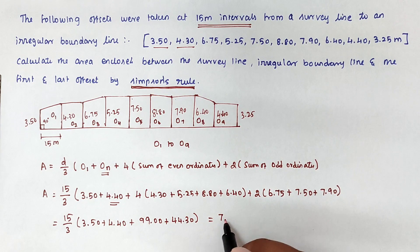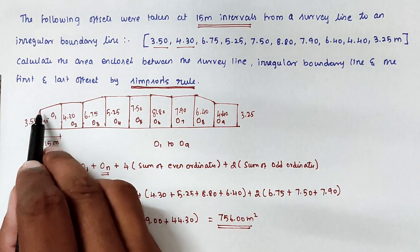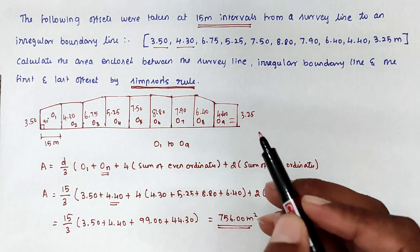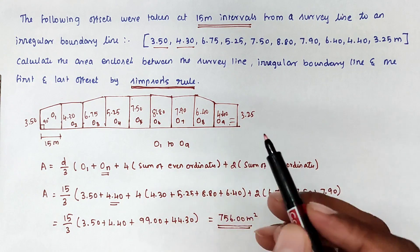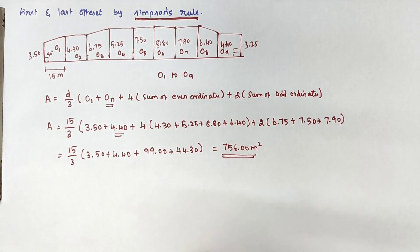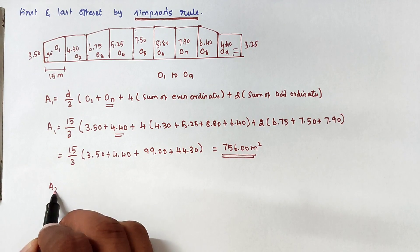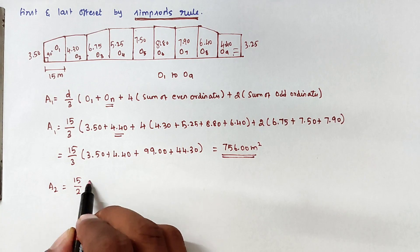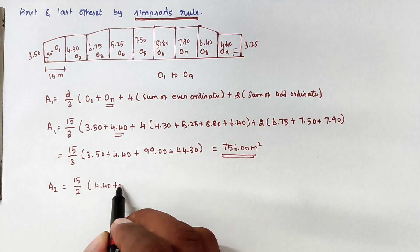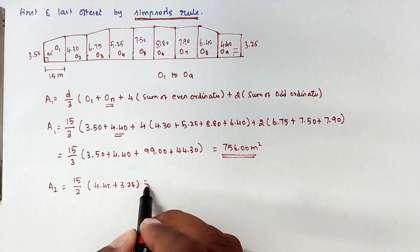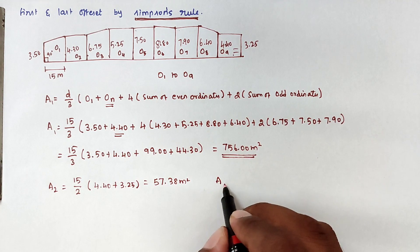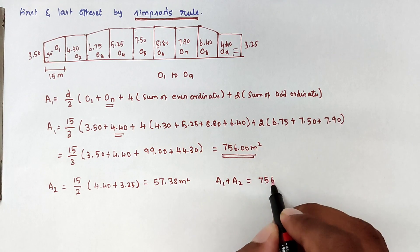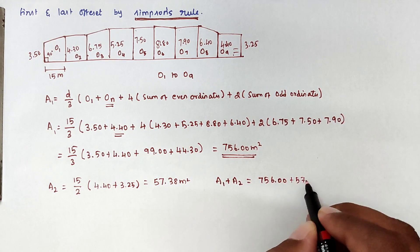So A1 = 756.00 square meters — this is the total area excluding the last portion. Now we apply the trapezoidal rule for Area 2: A2 = (15/2) × (4.40 + 3.25), which gives A2 = 57.38 square meters. So A1 + A2 = 756.00 + 57.38 square meters.